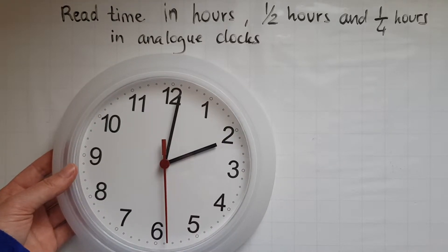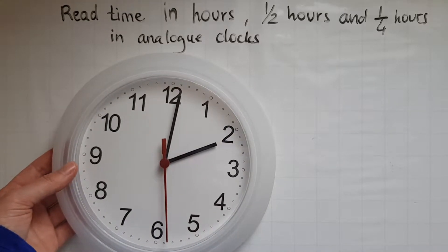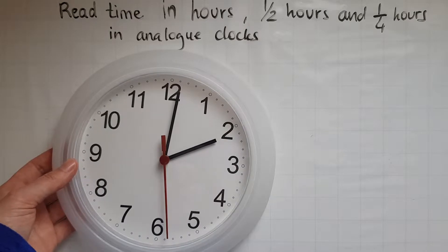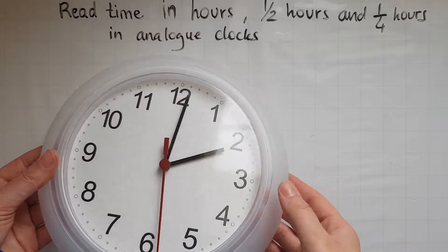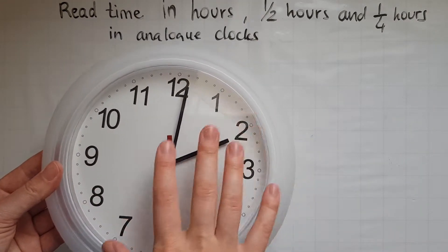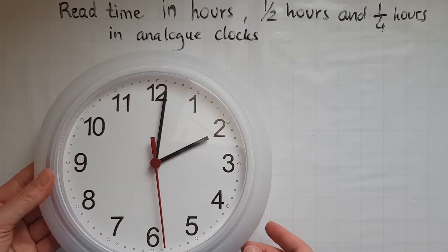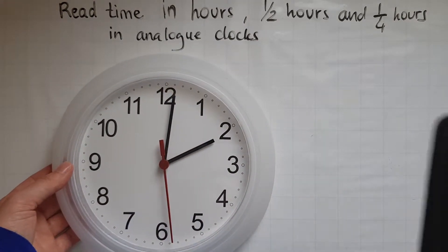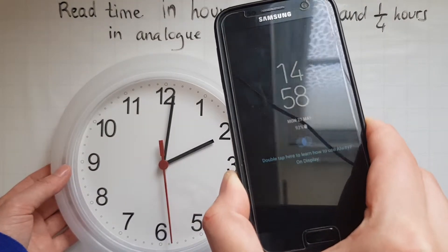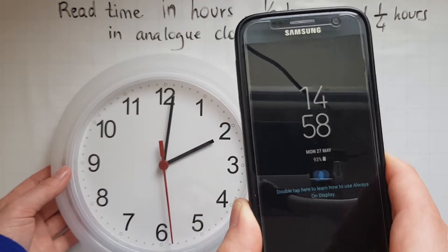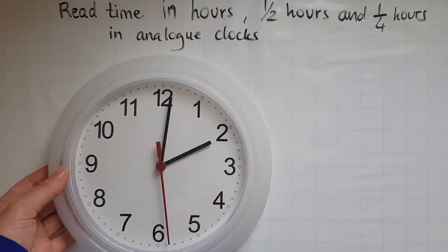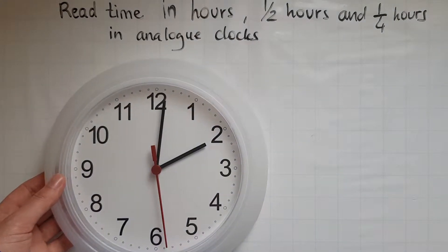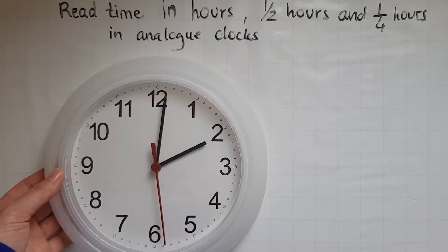In this video we'll learn to read time in hours, half hours and quarter hours in analog clocks. This is an analog clock, the one that you hang on the wall. A digital clock is the one you see normally in your phones or alarm clocks. So we'll use an analog clock.